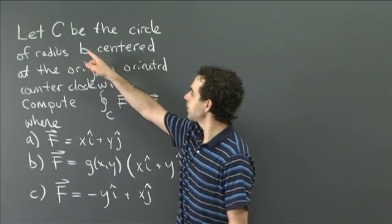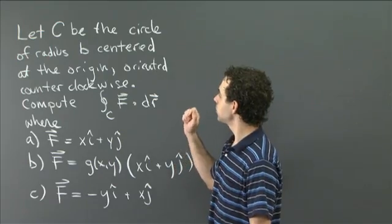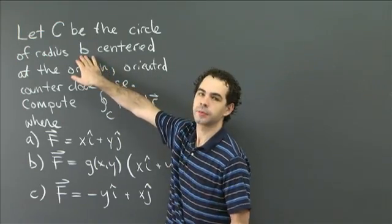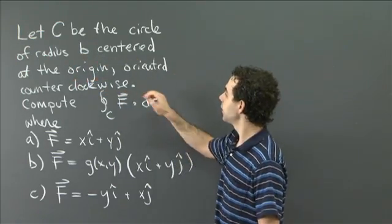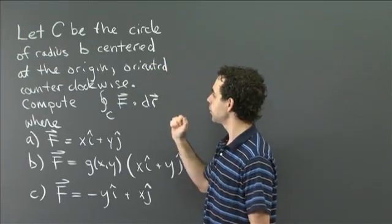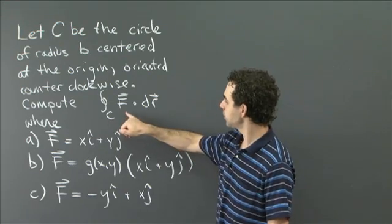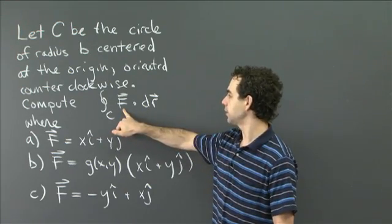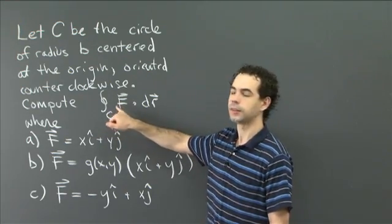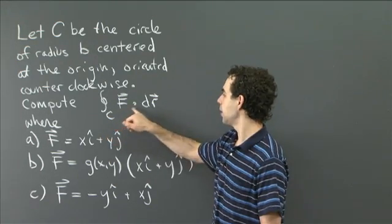So here I have some problems on line integrals for you. In all cases, I want C to be the circle of radius b, some positive constant, centered at the origin and oriented counterclockwise. And then what I'd like you to do is, for each of the following vector fields f, compute the line integral around C of f dot dr.